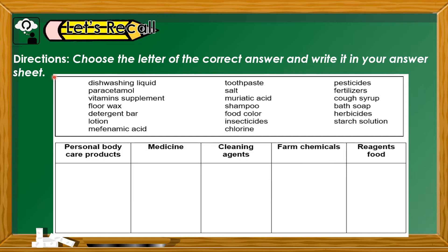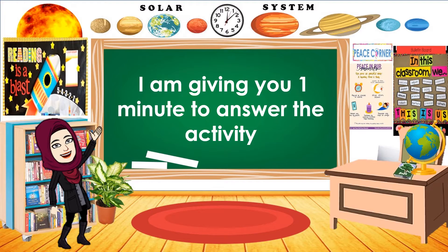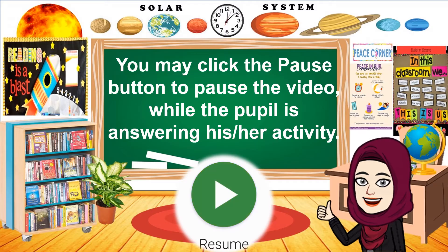Now, let's answer — let's recall. I will read the direction, so listen carefully. Directions: Choose the letter of the correct answer and write it in your answer sheet. You will choose your answer inside the box and write your answer in the column for personal body care products, medicine, cleaning agents, farm chemicals, or reagents food. Are you ready? I'm giving you 1 minute to answer the activity.